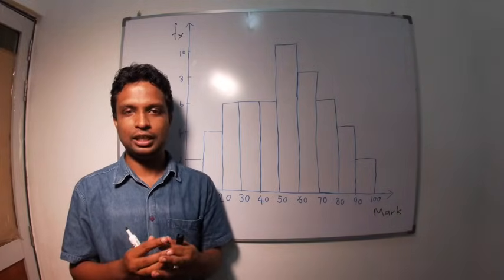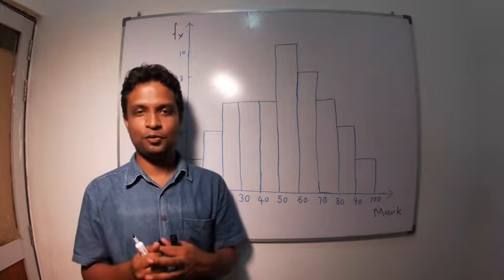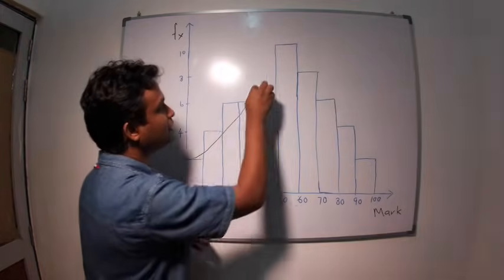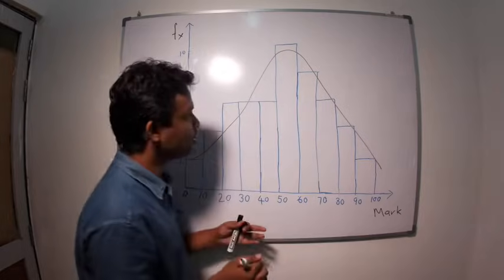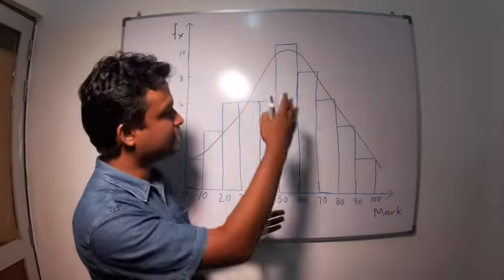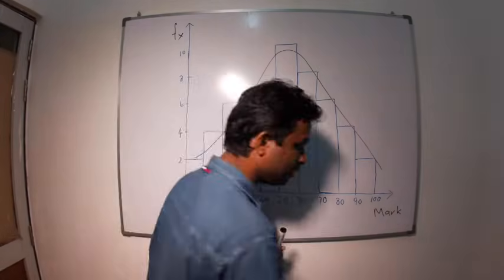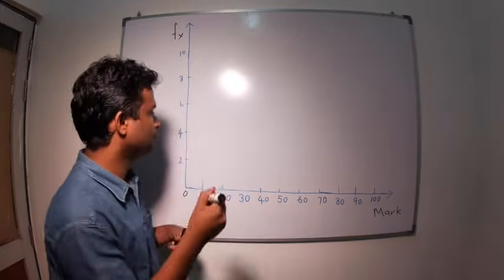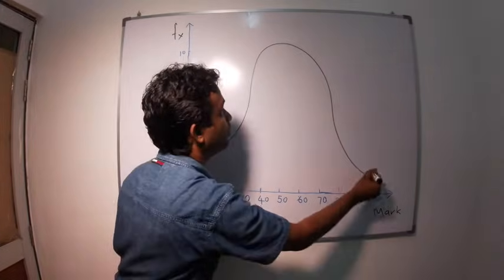Now, the most important thing is getting the shape of the distribution. So now you can see this kind of shape is there. If I erase the bars, you can get a shape like this.